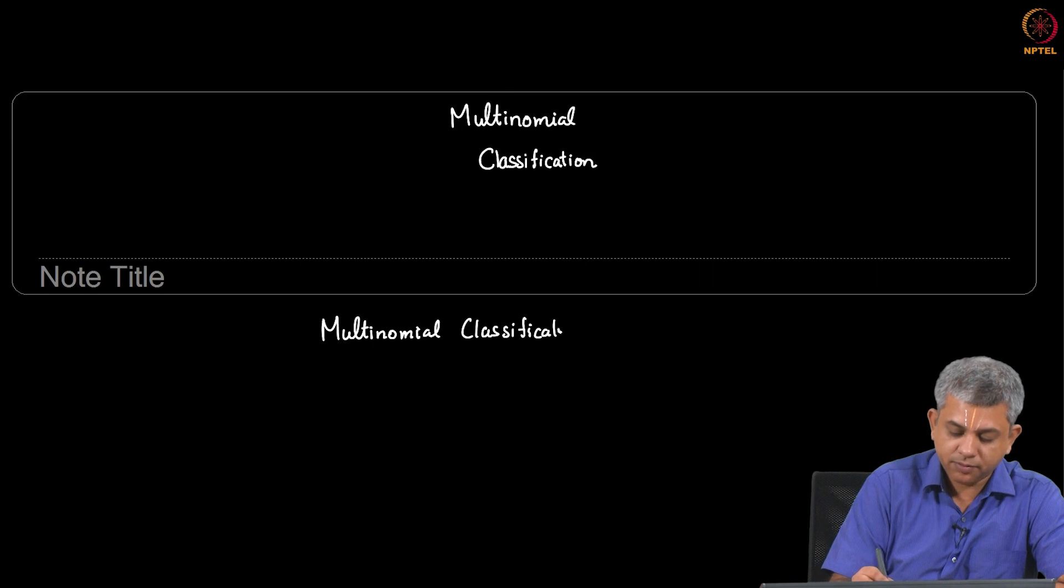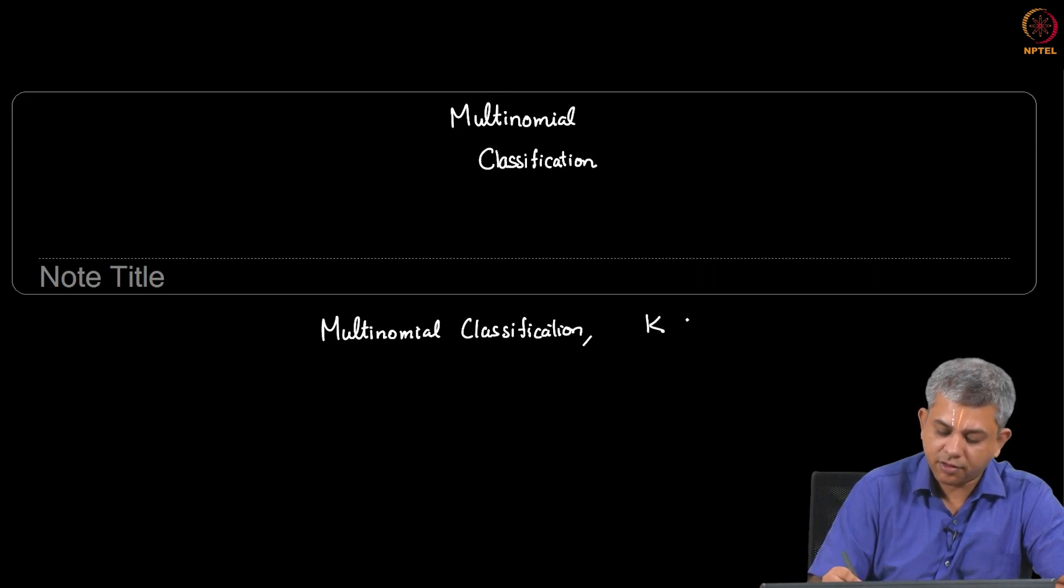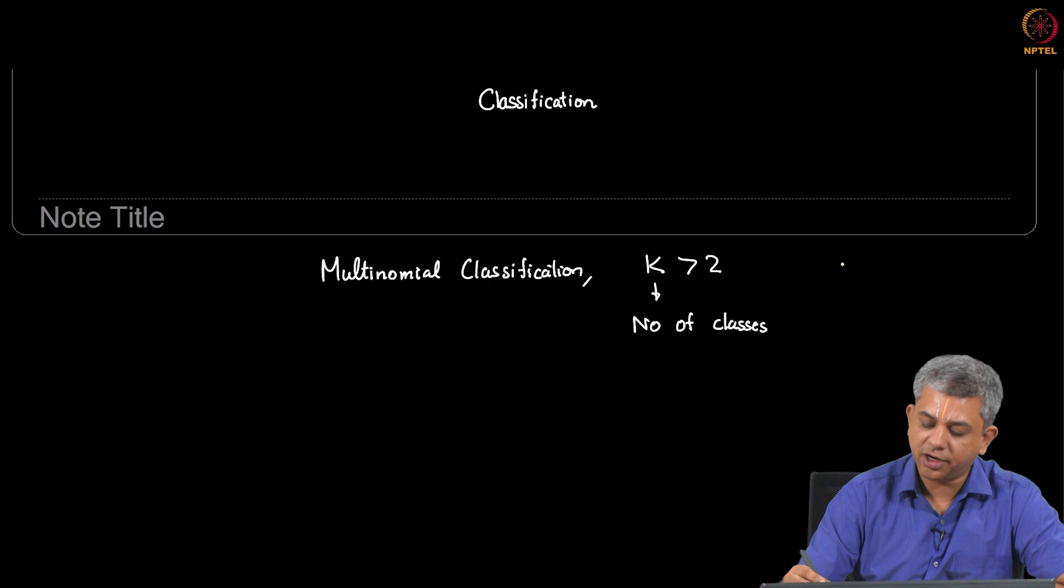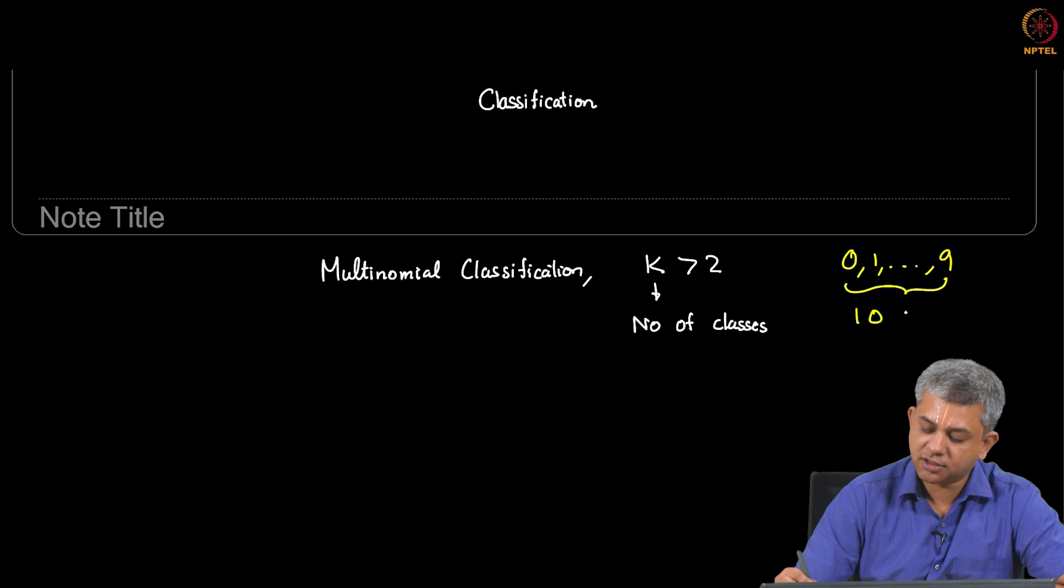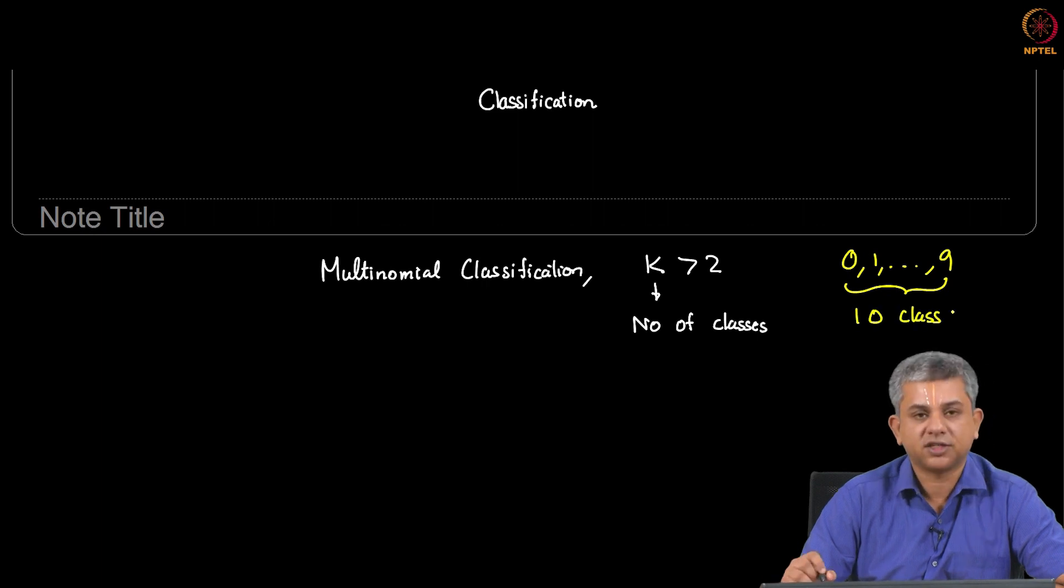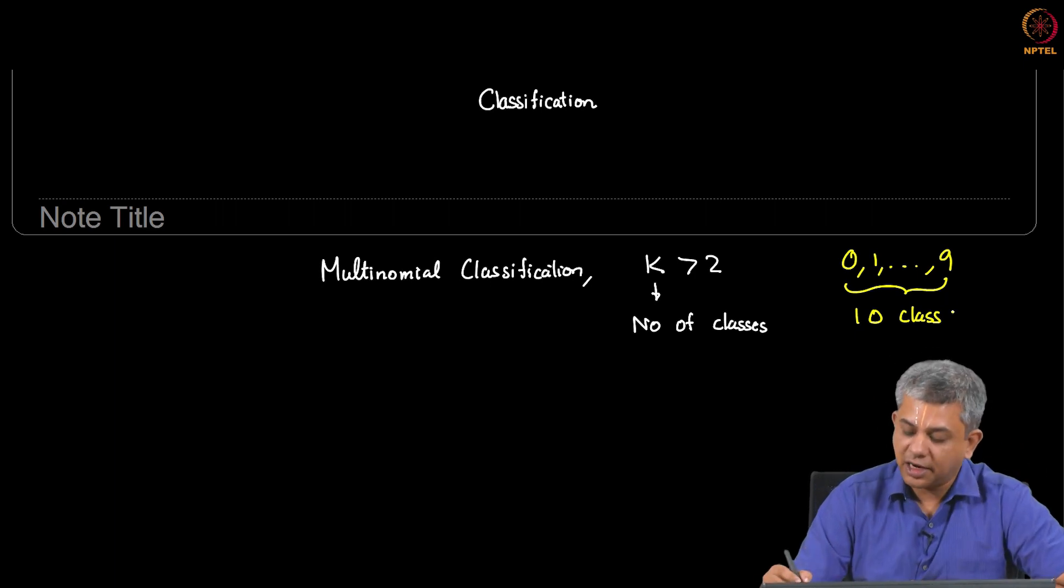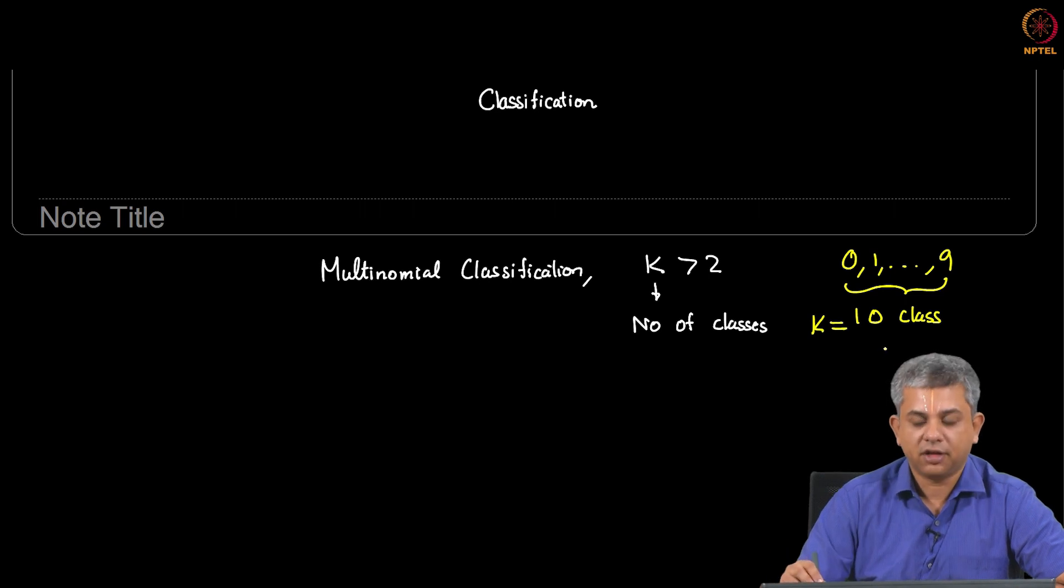For example, if you have a case where you want to classify digits, we will see examples of this later. So let us say you have all your digits from 0 through 9. So this is a 10 class classification problem. Somebody has handwritten digits and you want to find out which digit it is. That would be a 10 class problem. So K equal to 10 in such a case.